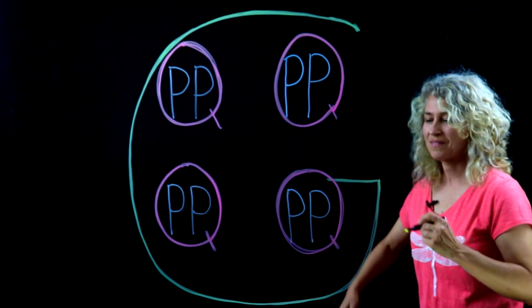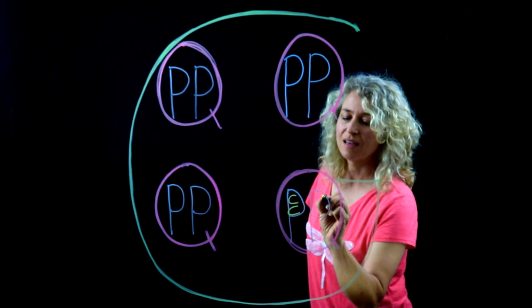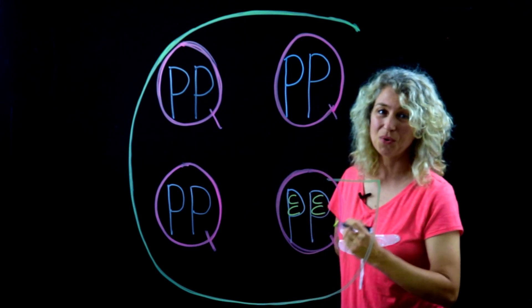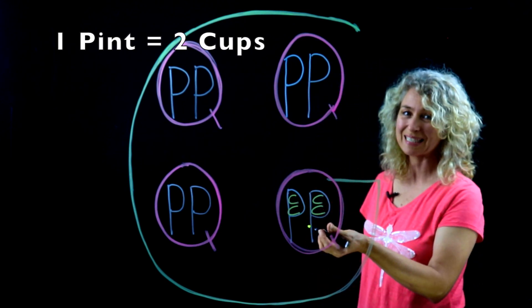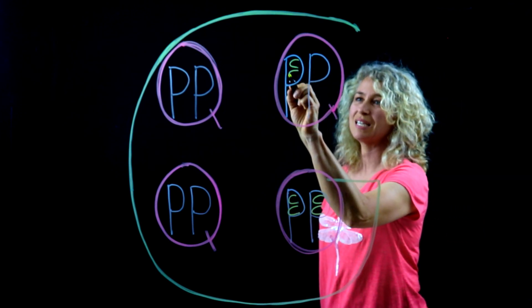And then the next letter is C. Since there are two cups in a pint, C stands for cups. We'll put two C's in every P.